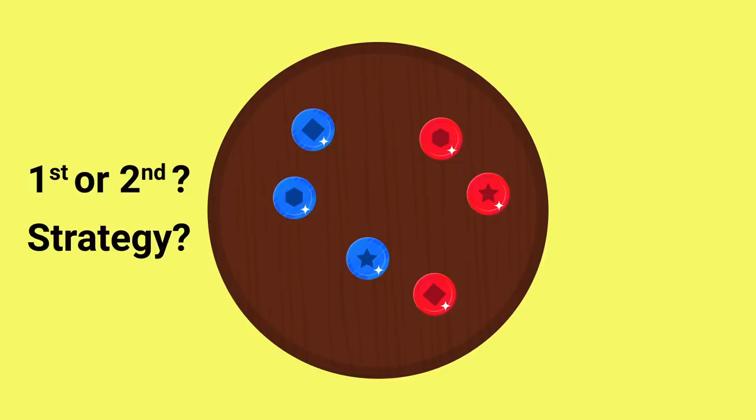Well it turns out you can always win this game if you go first by exploiting the symmetry of the table, and the strategy is simple. On your first turn, place a coin in the center of the table, then whatever the next player does, you just mirror that, placing your coin on the opposite side of that center, and you do this every time.